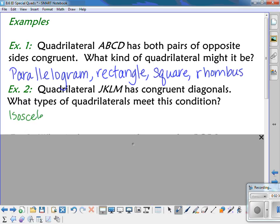So it could be an isosceles trapezoid. Kites do not have congruent diagonals, but it could be a parallelogram. Okay, so it could also be, it wouldn't be a parallelogram necessarily,